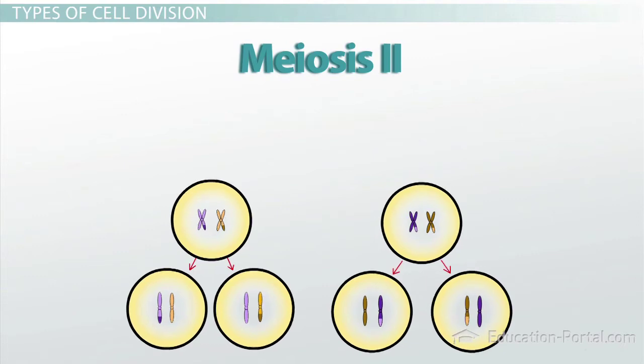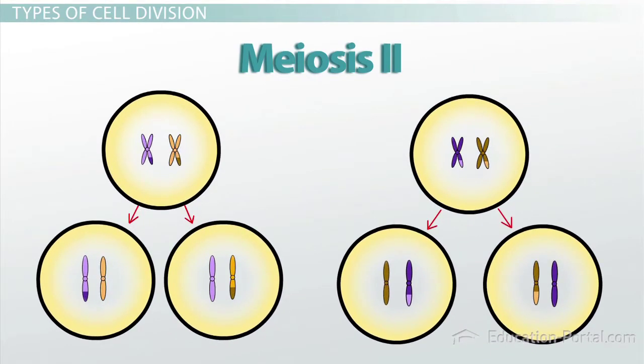Like mitosis, the number of chromosomes in each daughter cell is unchanged compared to the mother cell.